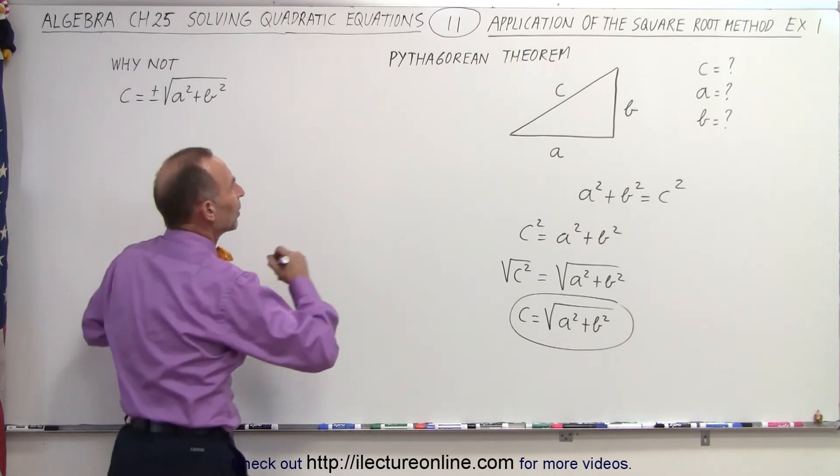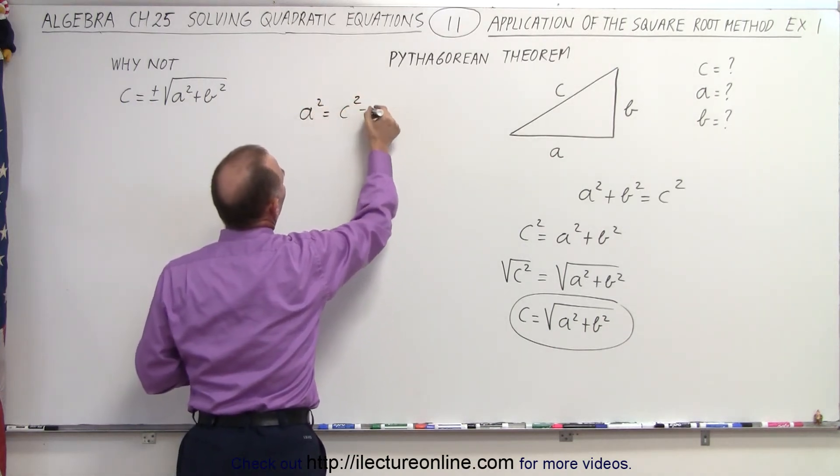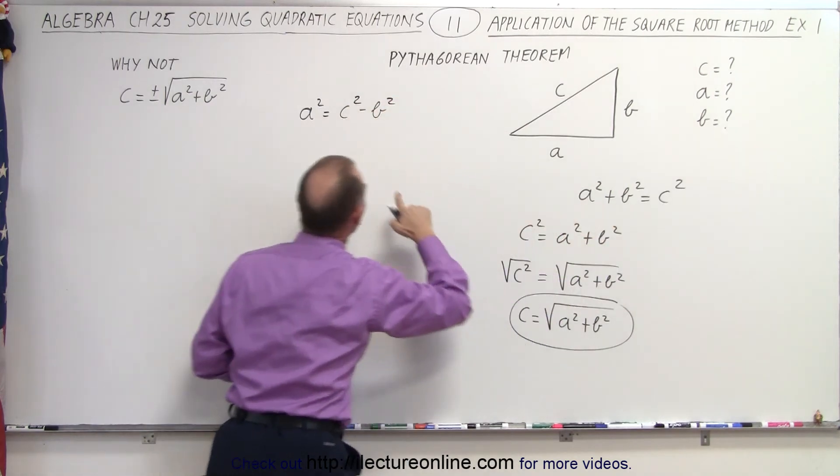Now let's solve for a. So what we can then say is that a squared is equal to c squared minus b squared by moving the b squared term over to the right side.